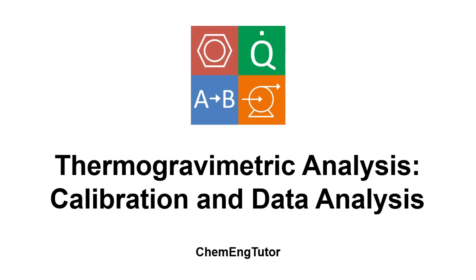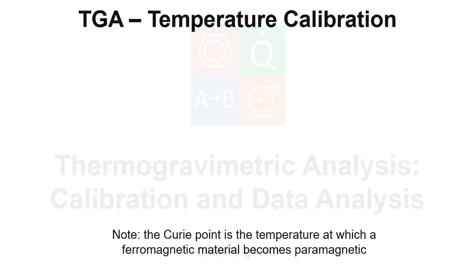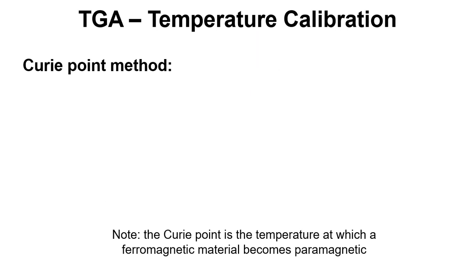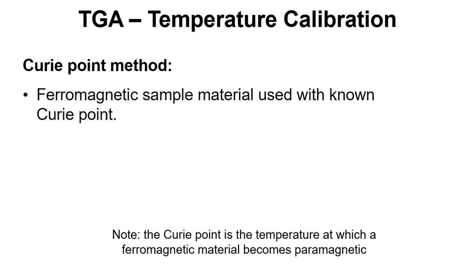In this video we're going to take a look at calibration and data analysis for TGA. The calibration is done using a Curie point method, where we have a ferromagnetic material that has a known Curie point.